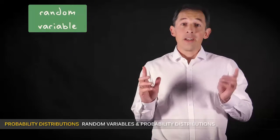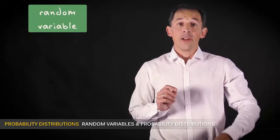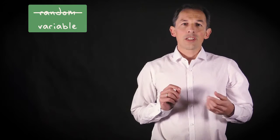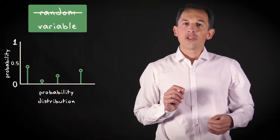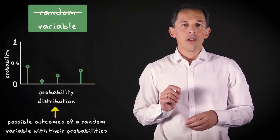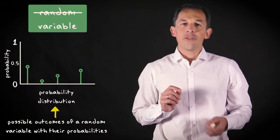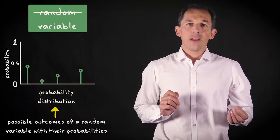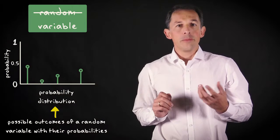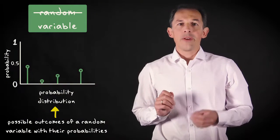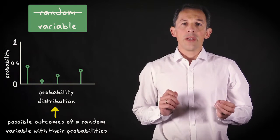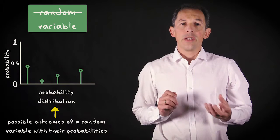A random variable can in fact be a lot less random than its name suggests. In this video I'll explain how a probability distribution describes the possible outcomes of a random variable with their probabilities. In that way, the probability distribution makes a lot of the randomness concrete and paves the road to use a random variable in calculations.